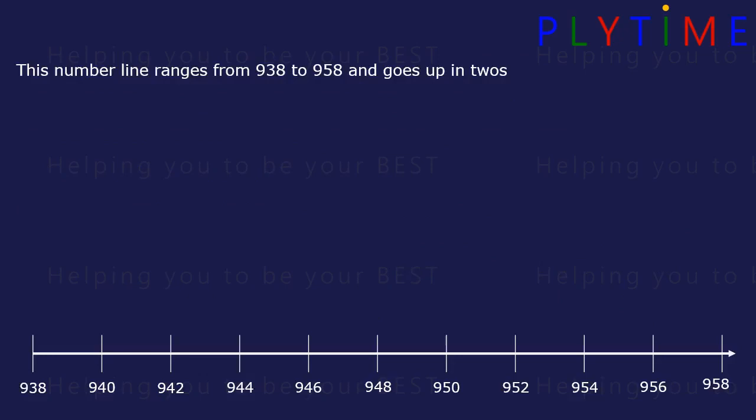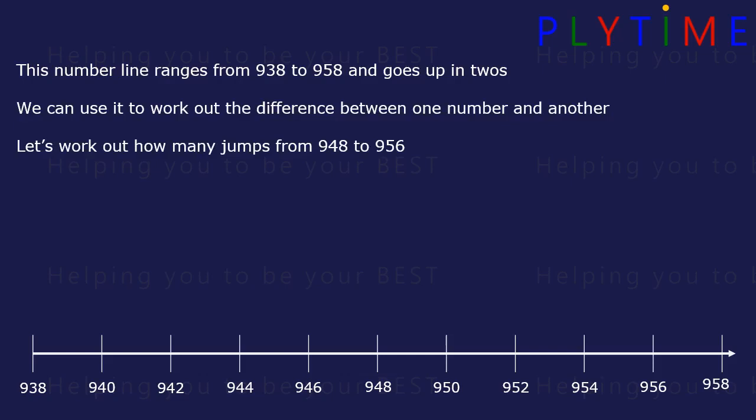This number line ranges from 938 to 958 and goes up in twos. We can use it to work out the difference between one number and another. What about from 948 to 956? Let's work out the jumps. We start at 948. Count the jumps.